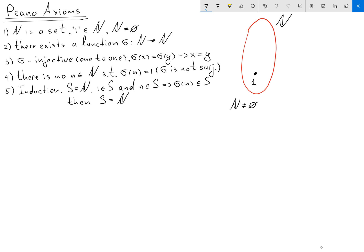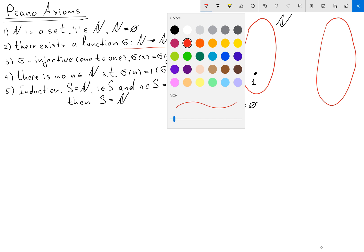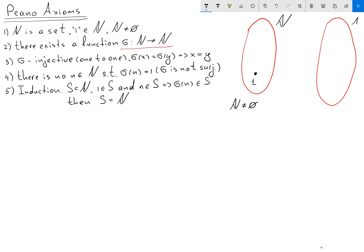What else do we know? We have a function sigma from N to N. So let's draw another set N on the right hand side. We know that in this set we also have element 1. We know that there is a function sigma from N to N. So this is our picture.